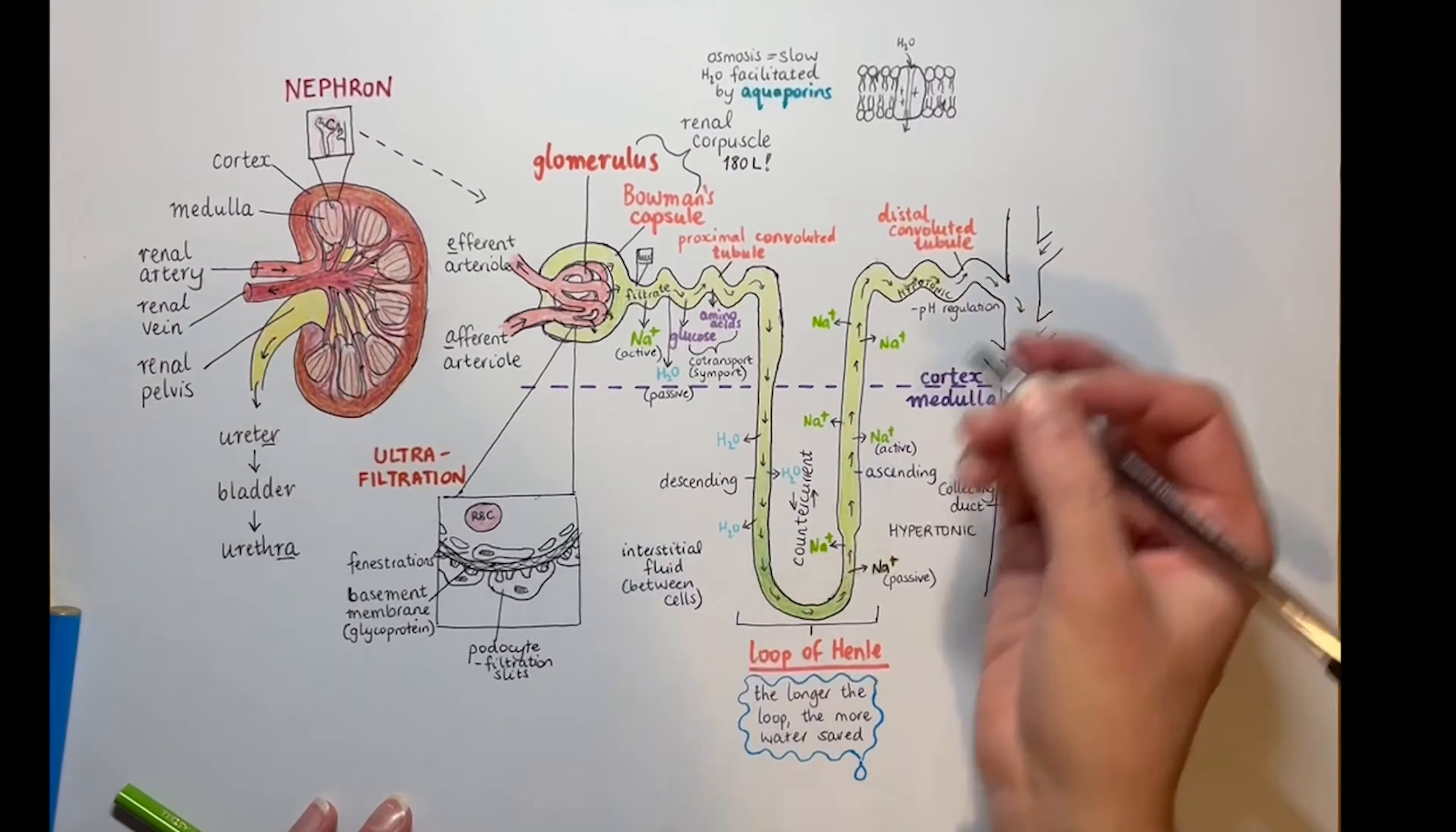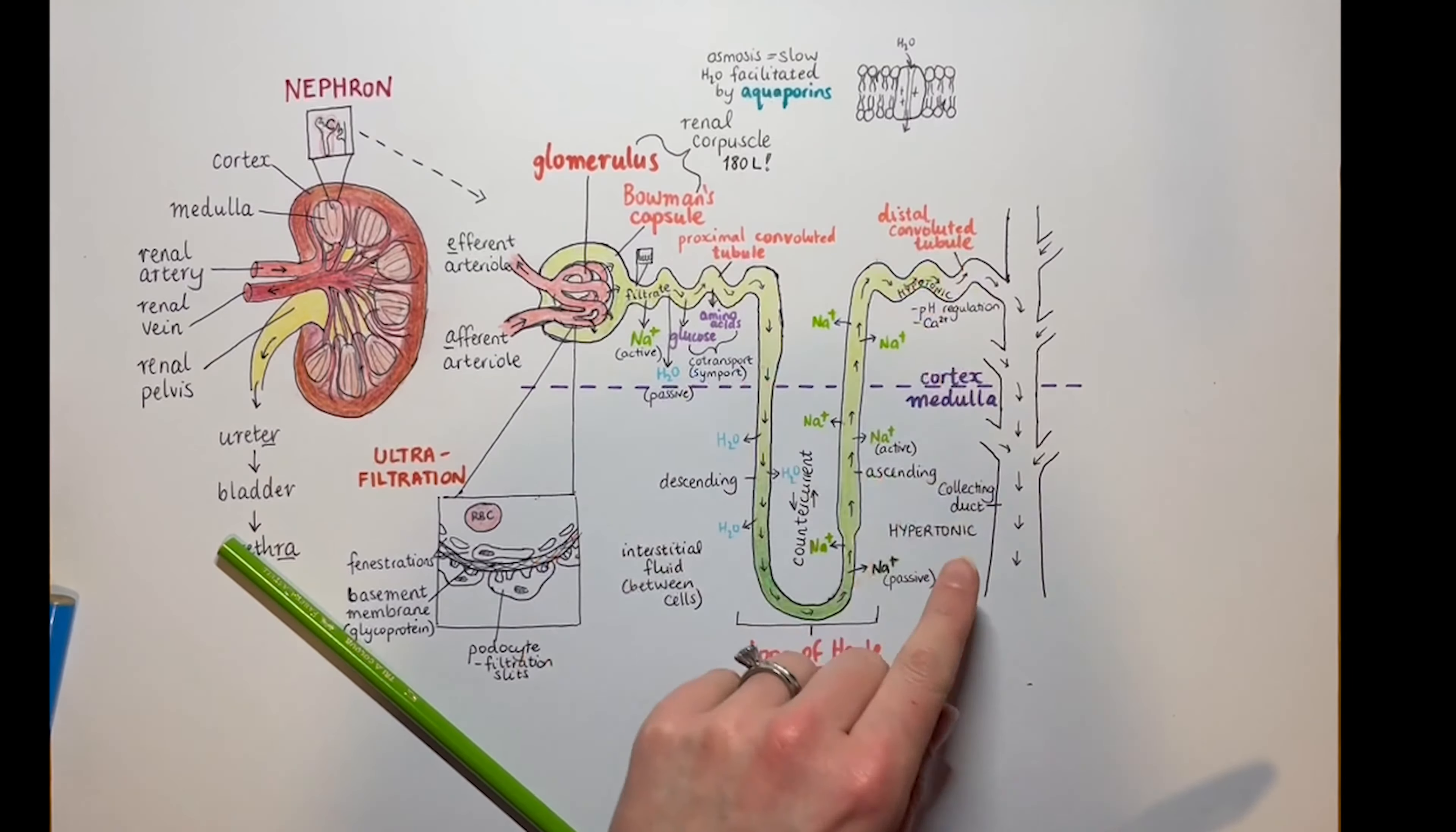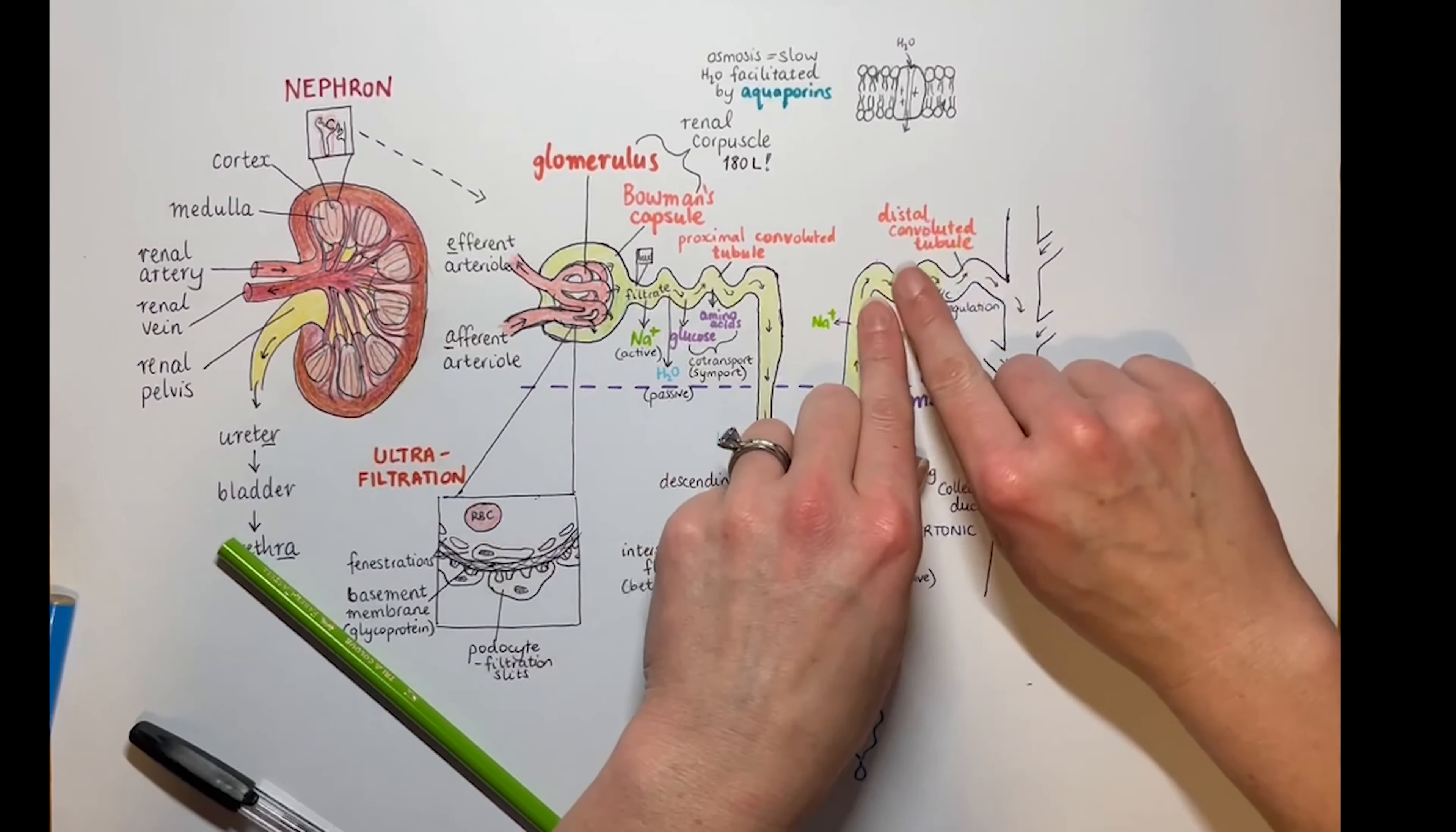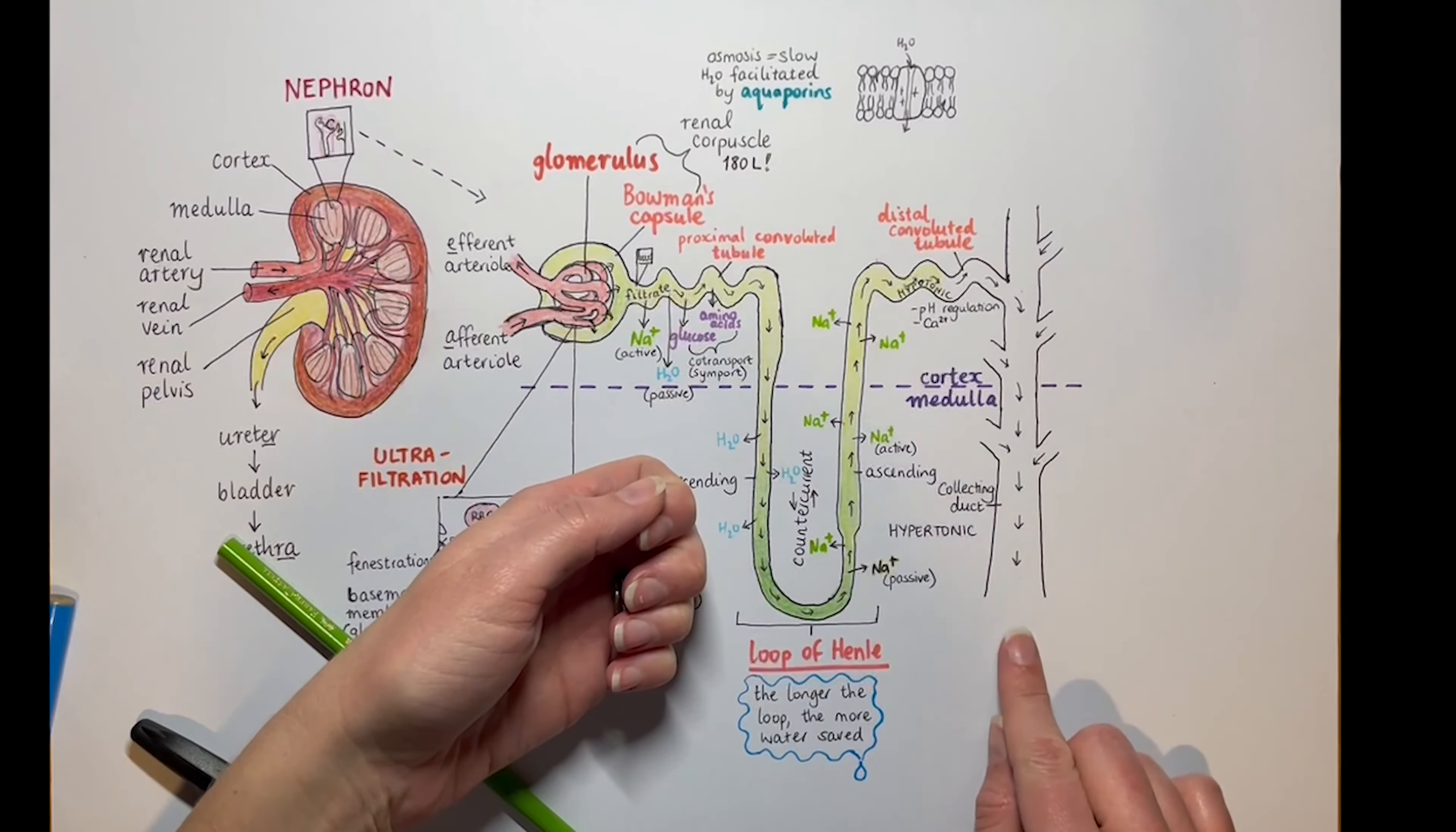The distal tubule has some more pH regulating to do and also calcium balance under instruction from the parathyroid, but we're going to gloss over that. Now what we've got is a fairly low-salt filtrate but a high-salt medulla fluid. So in the collecting duct, where lots of nephrons join the party and they link up here and drain into one common collecting duct for several nephrons, we get to make an unconscious choice. Could we let a fair bit of not-so-salty filtrate out as urine—have lots of wee that's not concentrated—or could we use the concentration gradient here in the medulla to our advantage to save more water and let out only a little bit of salty wee?